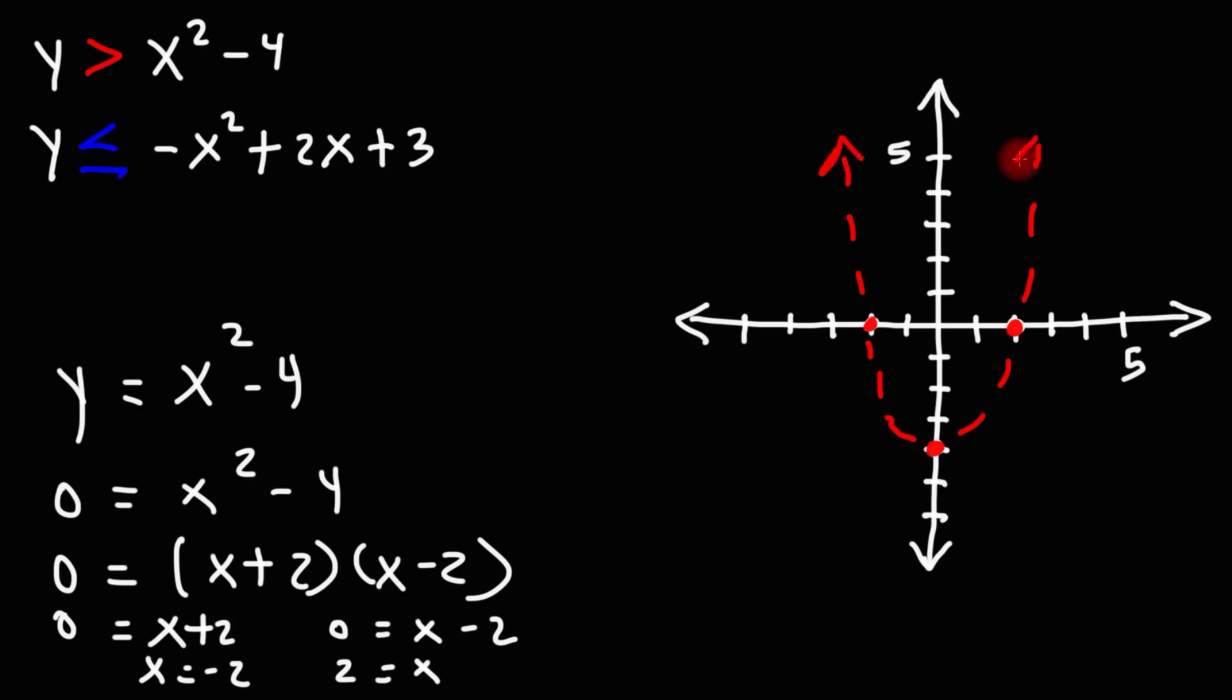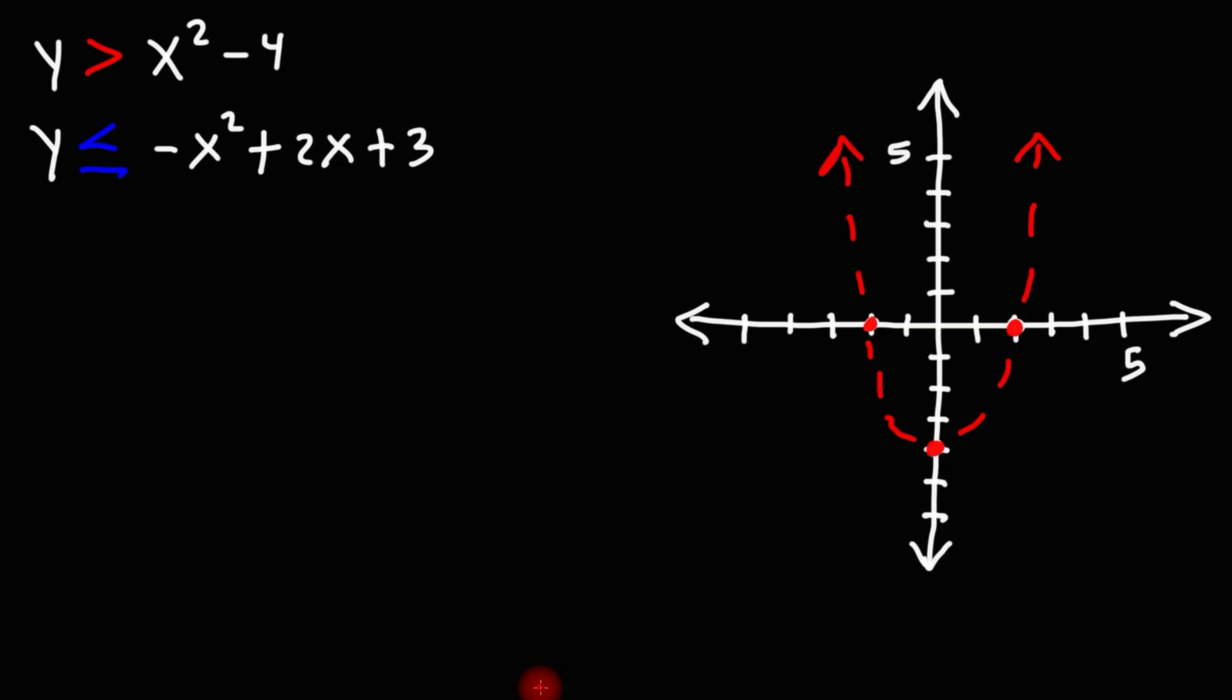So that's how we can graph y is greater than x squared minus 4. Now, for the second quadratic function, I'm going to graph that one in blue. So we have y is less than or equal to negative x squared plus 2x plus 3.